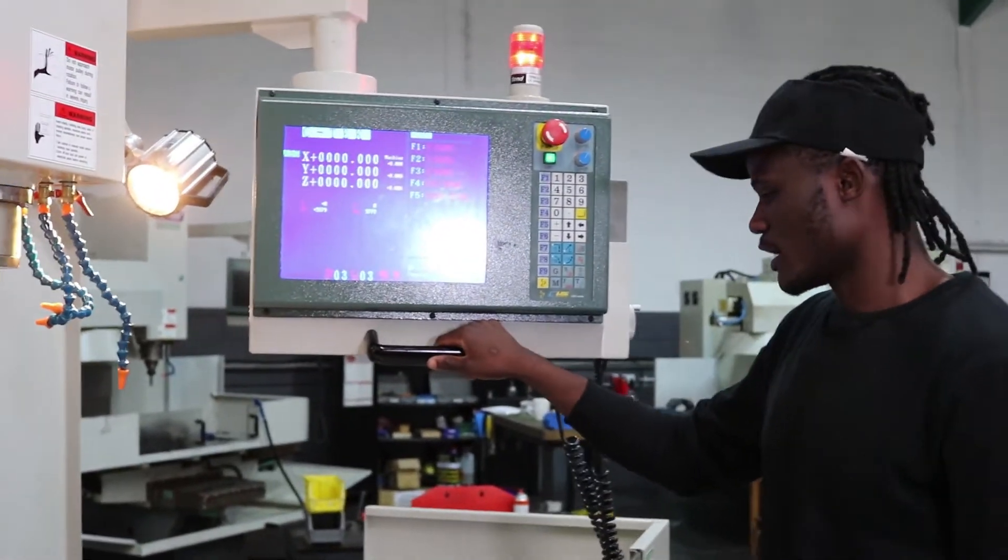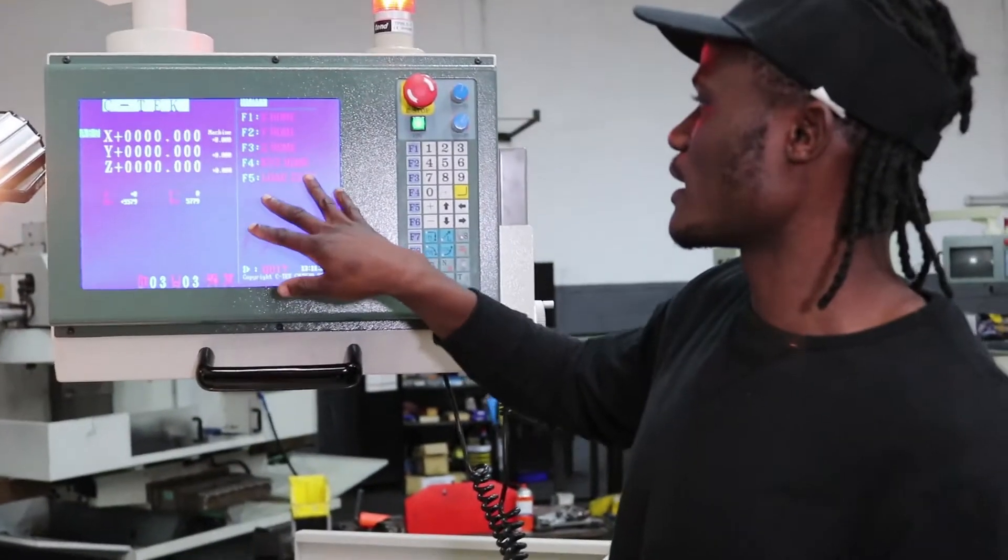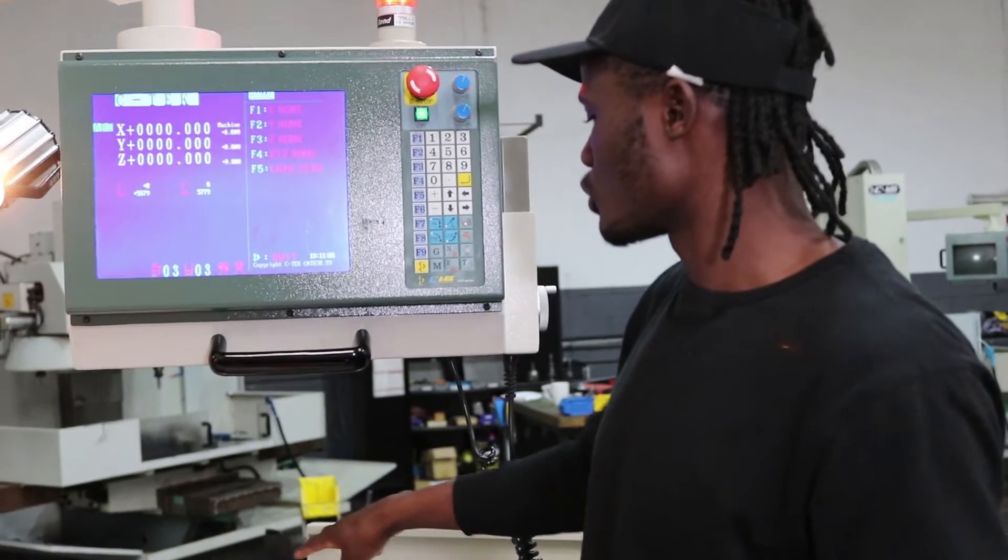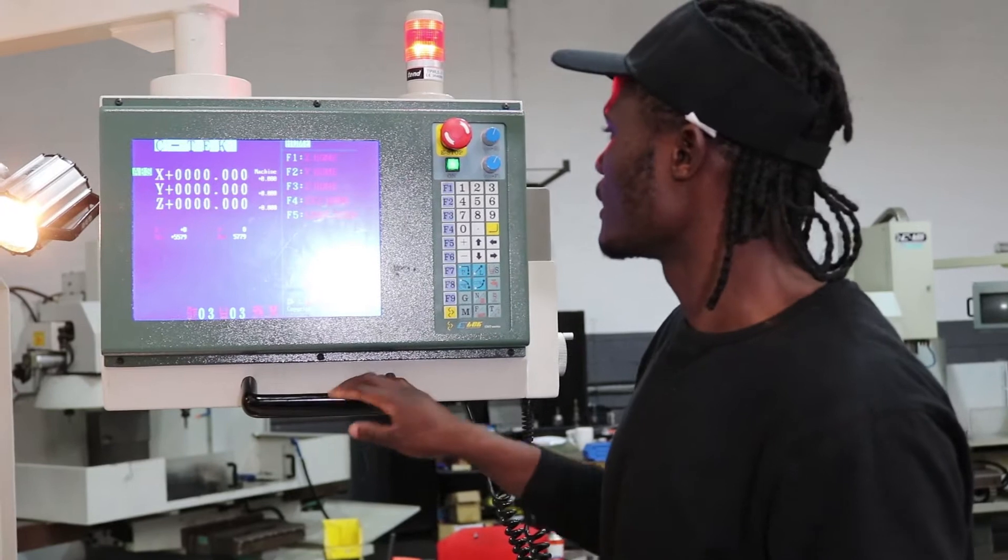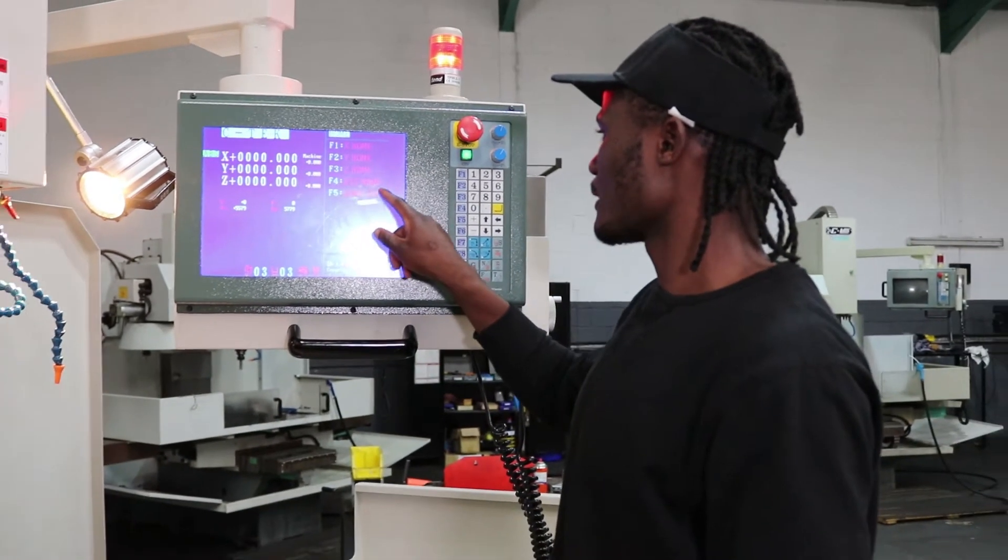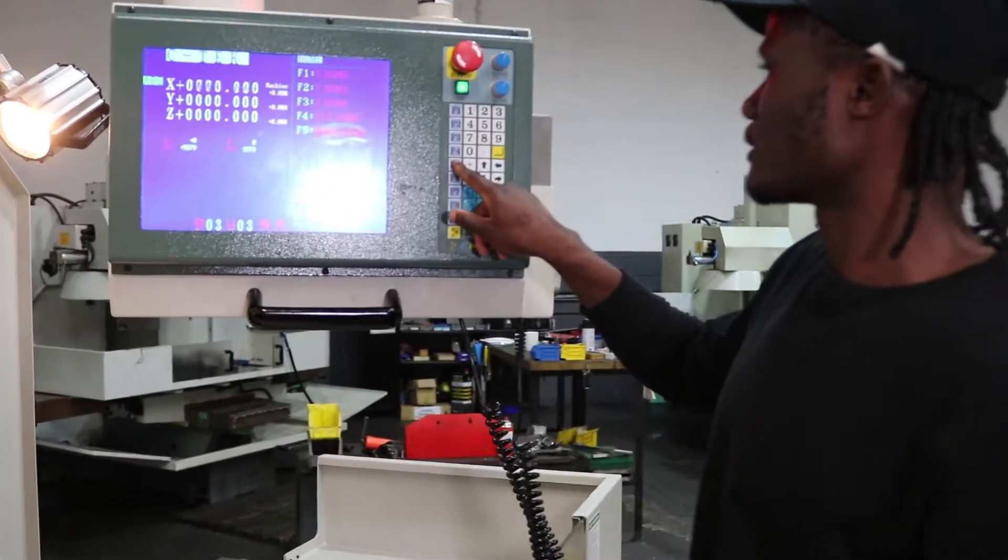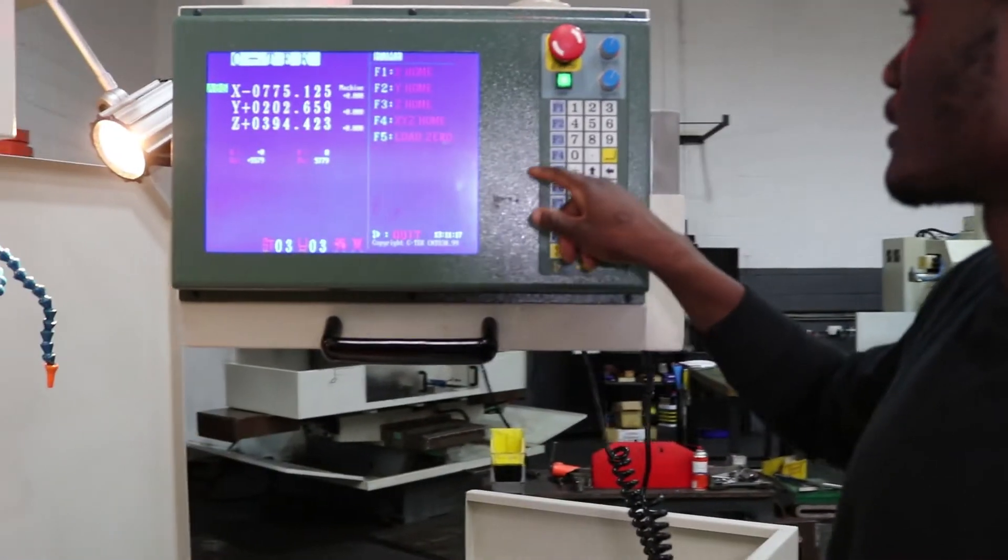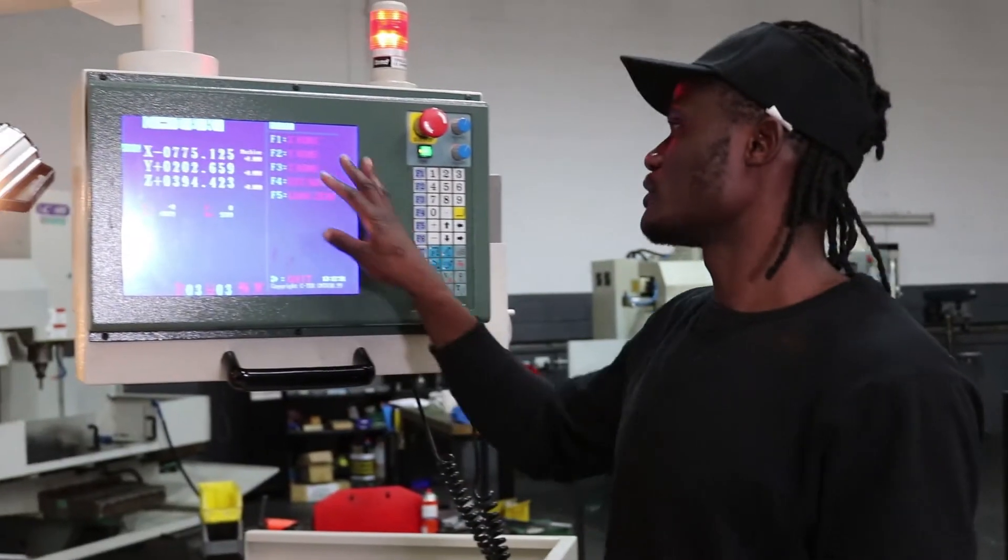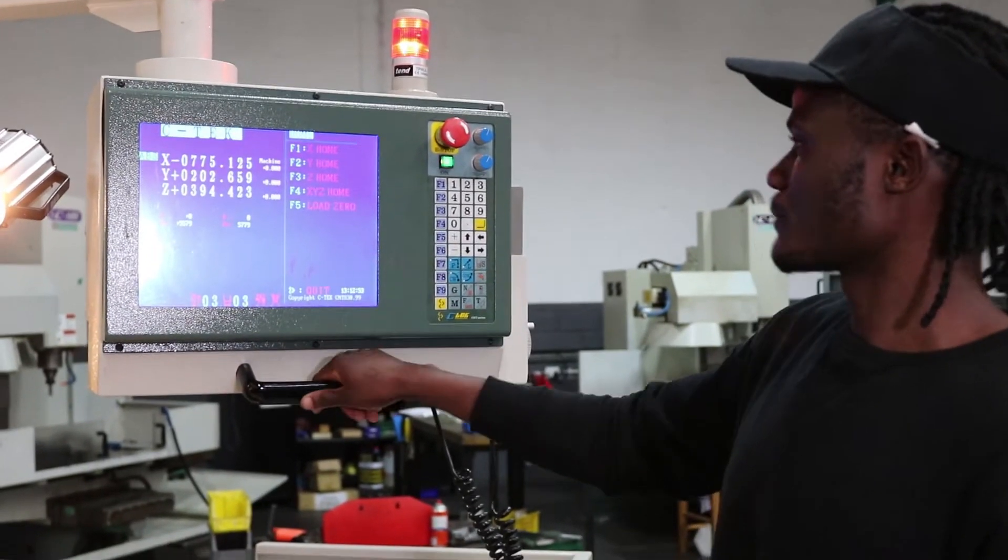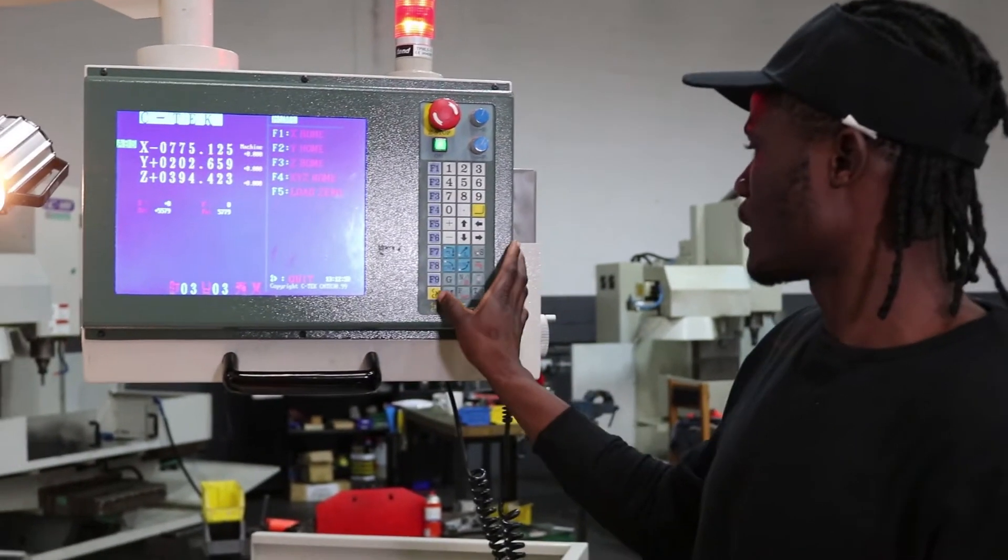Now you want to load the zeros. When you load the zeros it takes you back to the last position that you used your machine previously. You go here on F5 it says load zero so you press F5 in order for it to load the zero. Now you can see that all the zeros are loaded. When you're done with loading your zeros everything is loaded here XYZ.